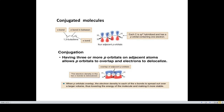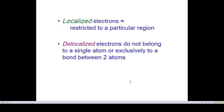Whenever p-orbitals overlap, the electron density in each pi bond is spread over a larger volume, resulting in lowering of the energy of the molecule and making it more stable. Whenever we have a pi bond, electrons can be localized — restricted to a particular region — or delocalized, not belonging to a single atom or exclusively to a bond between two atoms. In 1,3-butadiene, we have delocalization of electrons.